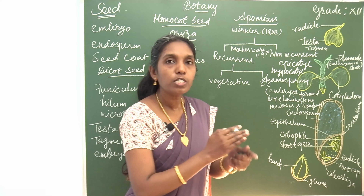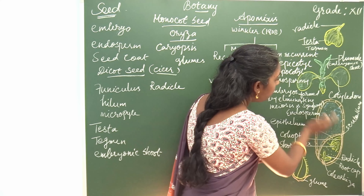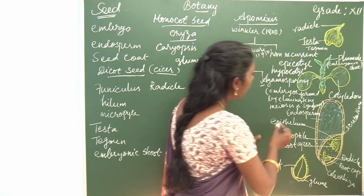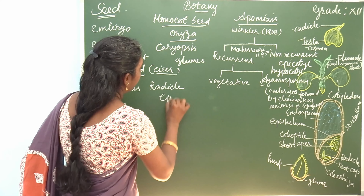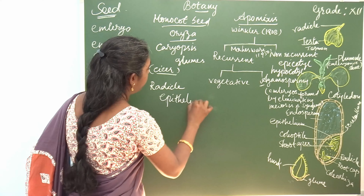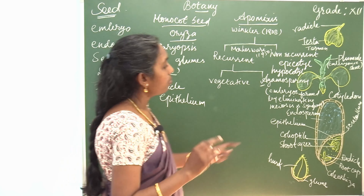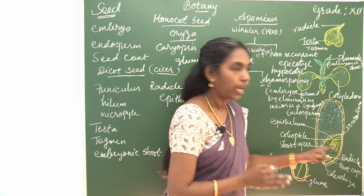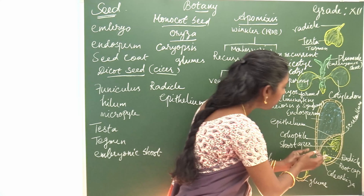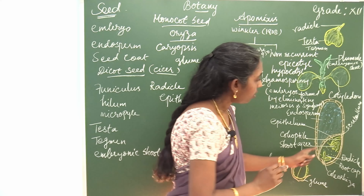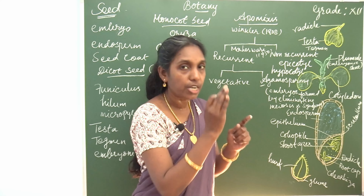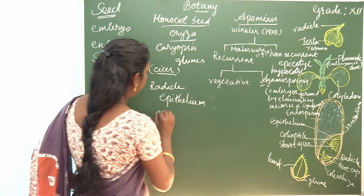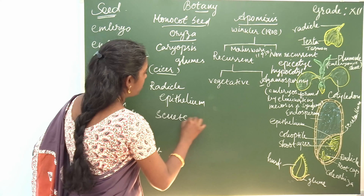The endosperm and the embryo are divided by a layer called epithelium. When you observe the embryo, there is a shield-shaped embryonal axis which is known as scutellum.